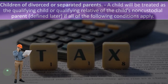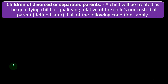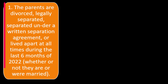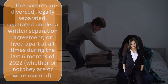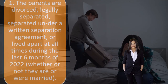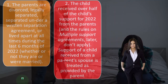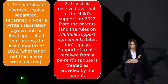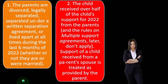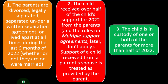Condition one: the parents are divorced, legally separated, separated under a written separation agreement, or lived apart at all times during the last six months of 2022, whether or not they were married. Condition two: the child received over half of the child's support for 2022 from the parents, and the rules on multiple support agreements don't apply. Support received from a parent's spouse is treated as provided by the parent.